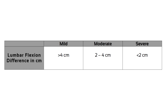Within the BASMI, lumbar flexion limitation is categorized as mild if the difference lies above 4 centimeters, as moderate if the difference lies between 2 to 4 centimeters, and as severe if the difference is less than 2 centimeters.